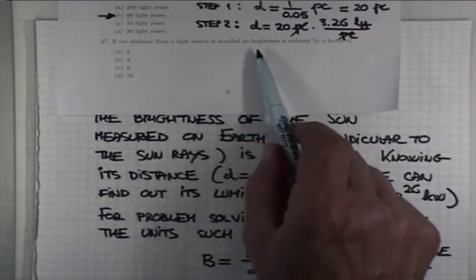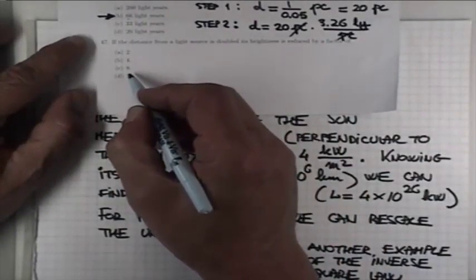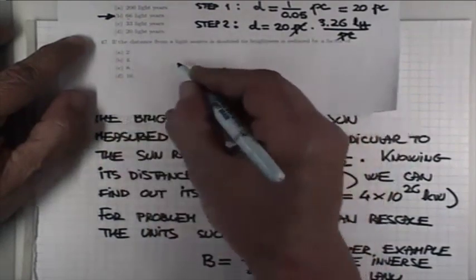its brightness is reduced by a factor of 2, 4, 8, or 16. We just said it.